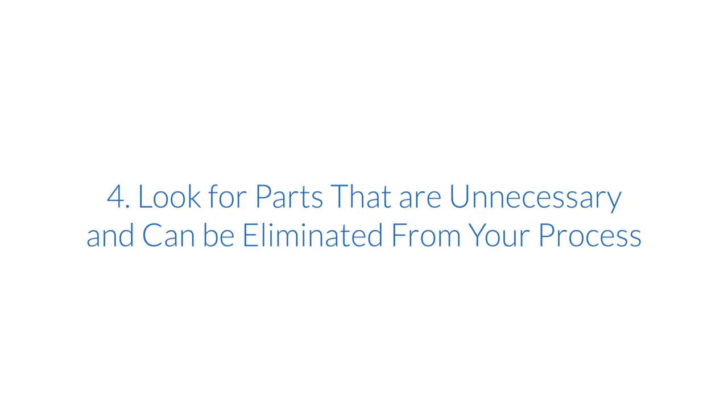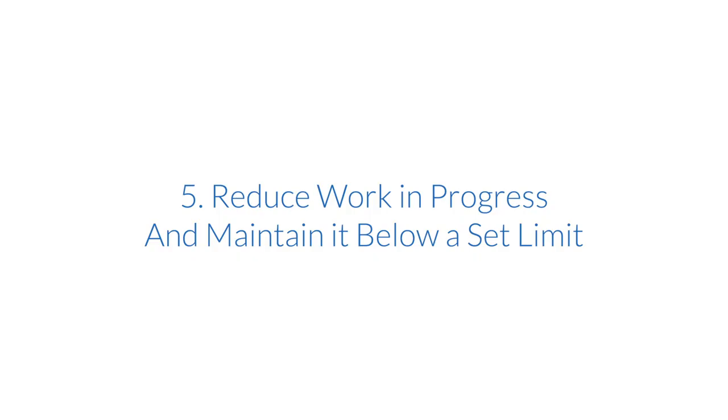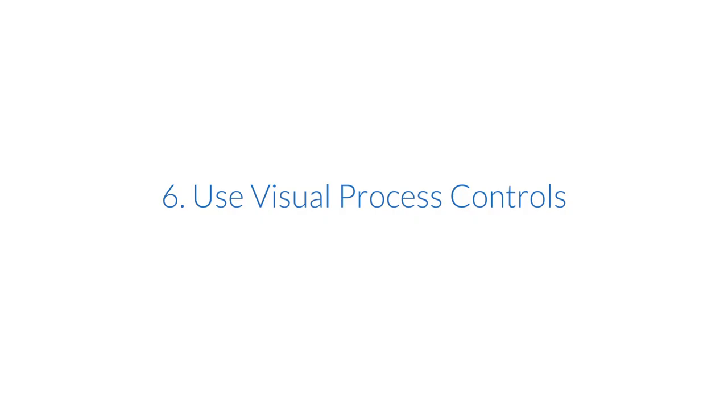Level out production to match customer demand with your resource availability. Look for parts that are unnecessary and can be eliminated from your process, like avoiding overproduction by focusing only on what a customer demands, and overprocessing by adding unnecessary steps. Reduce work in progress and maintain it below a set limit. To speed up error detection and ensure transparency, use individual process controls like kanban boards or andons.